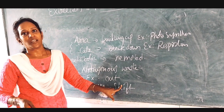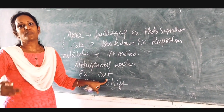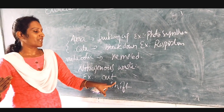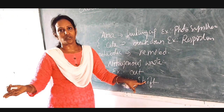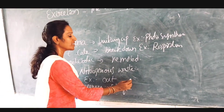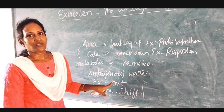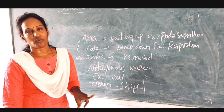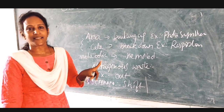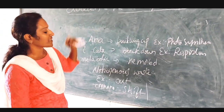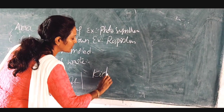'Crinare' means shift — it can be shifted from one place to another place, from one form to another form. Normally, from cell to blood, from blood it will be thrown out. The excretory organs in human beings — the kidney is the excretory organ. It can remove the waste.